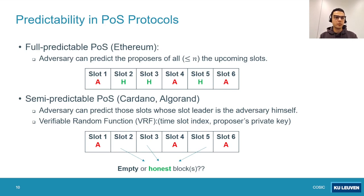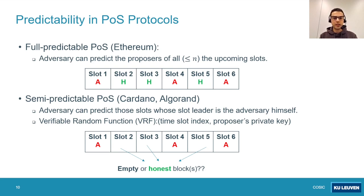In our paper we divide proof-of-stake protocols into two groups. The first group is the fully predictable proof-of-stake protocol, such as Ethereum, where the adversary can predict the proposers of all upcoming slots. The second group is semi-predictable proof-of-stake protocols, such as Cardano and Algorand, which are based on a verifiable random function. In these protocols, the adversary can only predict those slots where the slot leader is the adversary themselves, and has no information about the remaining slots — which can be empty or have honest proposers.